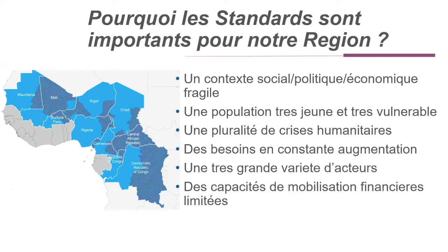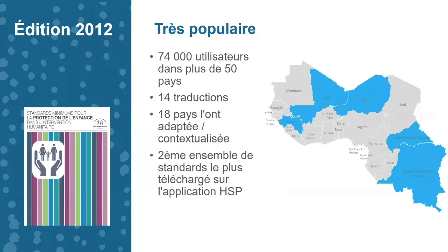There is a very great variety of actors, and I believe the standards have really helped since 2012 to structure our sector, to speak the same language between national NGOs, community-based organizations, international NGOs, and institutions, even with donors. We remain in a context of very limited financial mobilization — between 30 and 55% of financial needs are met each year. The 2012 edition was very popular: nearly 75,000 users in more than 50 countries, 14 translations including French, and 18 countries have contextualized it — about a third from francophone Africa.